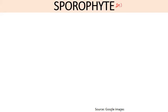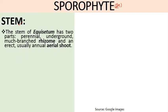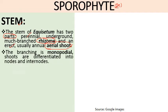Regarding the sporophyte: the Equisetum plant body is sporophytic, meaning it is diploid, and is differentiated into true root, stem, and leaves. The stem has two parts: first, a perennial underground much-branched part known as the rhizome; and second, the erect usually annual aerial shoot, which is green in color. The branching pattern of Equisetum is monopodial, meaning branches grow in one direction, and shoots are differentiated into nodes and internodes.